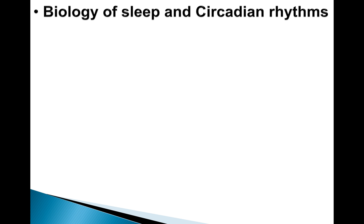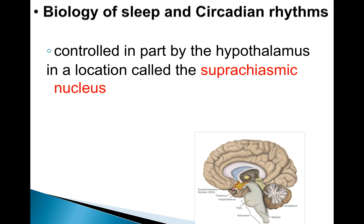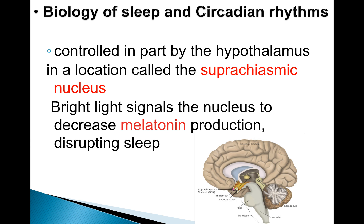Let's look more carefully at the biology of sleep. Sleep is controlled in part by the hypothalamus, specifically in a location called the suprachiasmatic nucleus, which you can see in the diagram on the slide. Basically, bright light that we're exposed to during the day signals the nucleus to decrease melatonin, disrupting sleep. The problem comes if you're looking at a computer screen when you should be asleep — that light will decrease melatonin and cause you to stay awake more than you should.